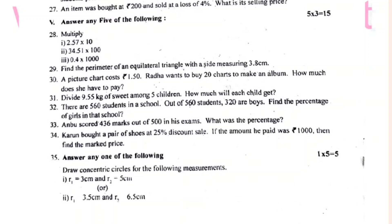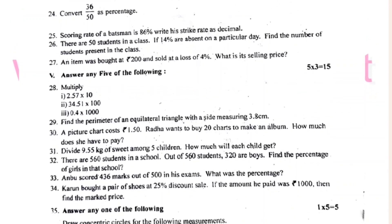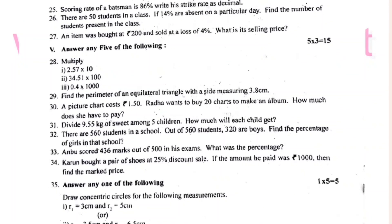You can find the perimeter of an equilateral triangle with a side measuring 3.8 cm, and the picture chart costs 1.50. Radha wants to buy 20 shots to make an album. How much does he have to pay? It's very simple. You can find the 3 marks, and if you find the 3 marks, you can find the 5 marks.